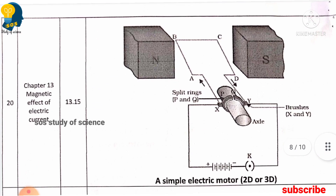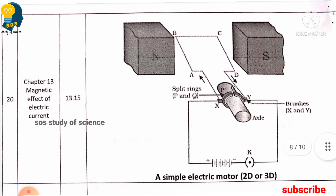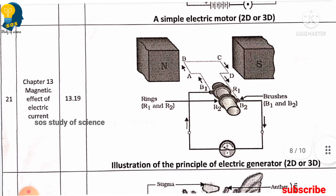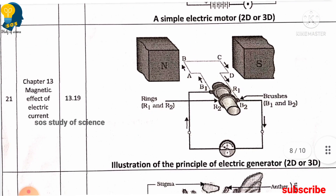The next and most important diagram is a simple electric motor, also from the lesson magnetic effects of electric current. Next is the illustration of the principle of an electric generator.